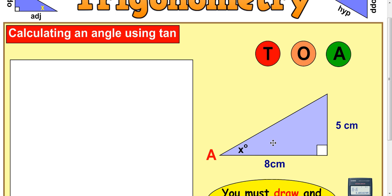Now here's a triangle here. We've got 8 along the bottom, 5 up and down the side, and we're asked to find this angle here.